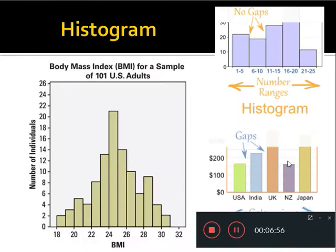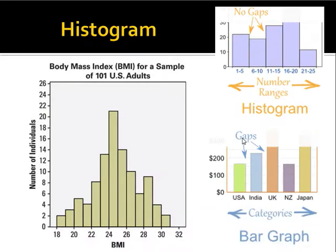Now we will go to the different types of graphs of frequency distribution. The manner in which the frequencies are distributed over different classes is called the frequency distribution of the character under study. There are many ways to represent a frequency distribution.